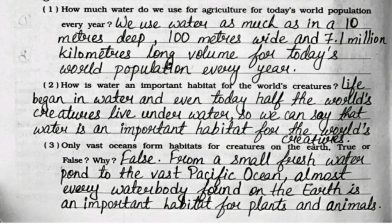So we can say that water is an important habitat for the world's creatures. Third: Only vast oceans form habitats for creatures on the earth — true or false? False. From a small fresh water pond to the vast Pacific Ocean, almost every water body found on the earth is an important habitat for plants and animals.